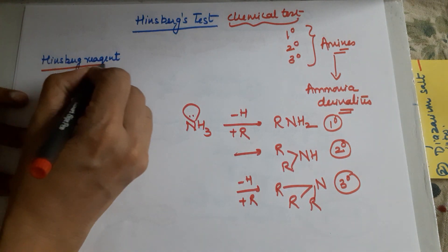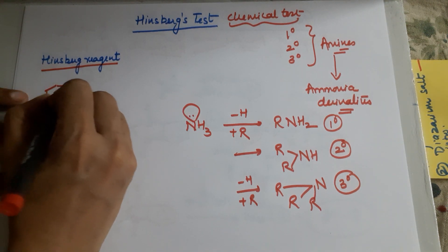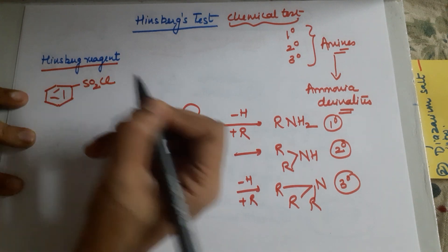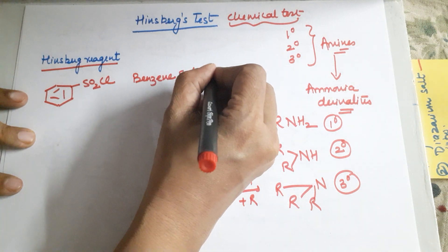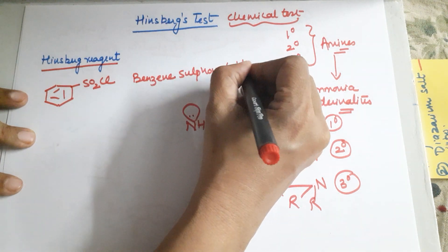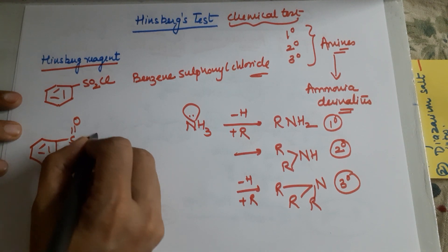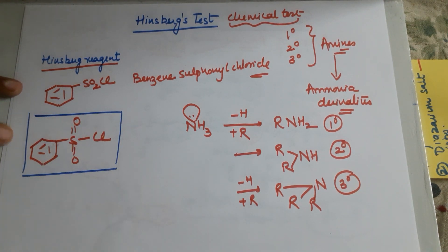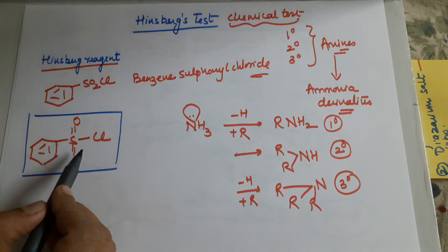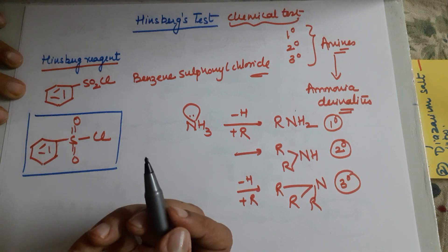The name of the test is Hinsberg's test and we require something called the Hinsberg reagent. The Hinsberg reagent has a formula which is also called benzene sulfonyl chloride. Opening up this structure, this is the formula for benzene sulfonyl chloride. Now we would be adding this benzene sulfonyl chloride to each of the amines.